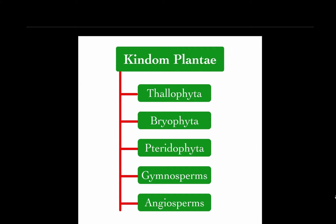Subgroups of Kingdom Plantae are Thalophyta, Bryophyta, Pteridophyta, Gymnosperms, and Angiosperms.